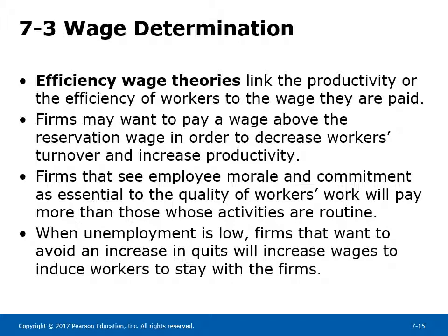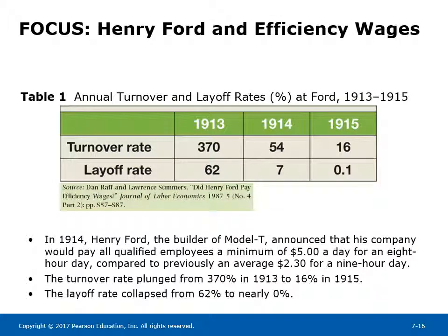When unemployment is low, firms that want to avoid an increase in quits will increase wages to induce workers to stay. Focus: Henry Ford and Efficiency Wages. Table 1 shows annual turnover and layoff rates at Ford from 1913-1915. In 1914, Henry Ford, the builder of the Model T, announced that his company would pay all qualified employees a minimum of $5 a day for an 8-hour day, compared to previously an average of $2.30 for a 9-hour day. The turnover rate plunged from 370% in 1913 to 16% in 1915. The layoff rate collapsed from 62% to nearly 0%.